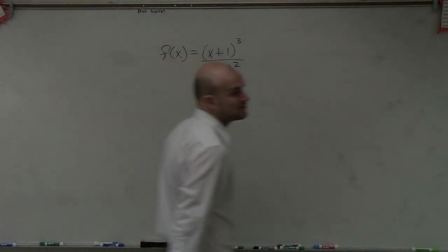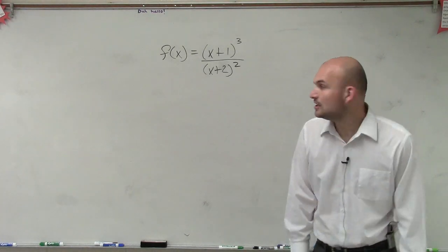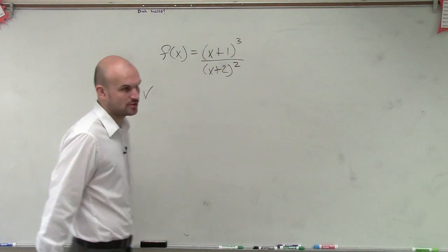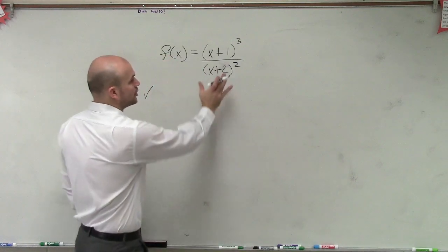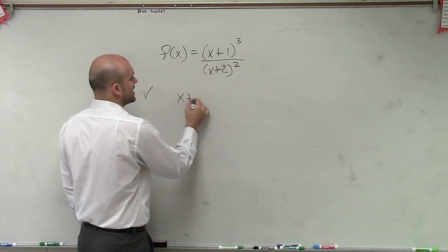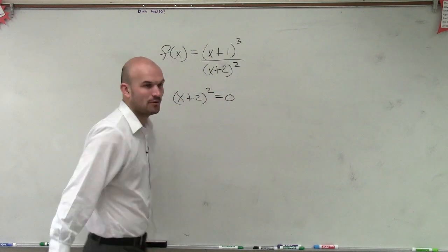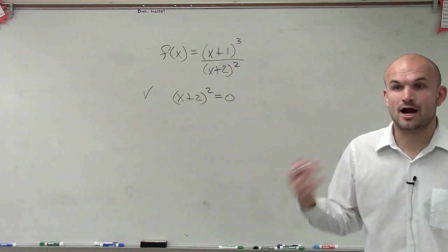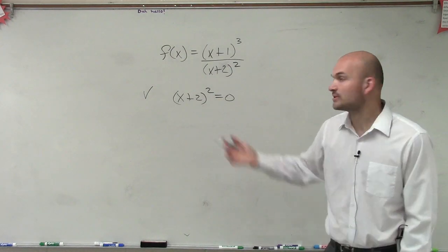On this one, ladies and gentlemen, they're asking us to graph it. So automatically we're just going to go through the steps. The first thing to graphing it is we need to determine the vertical asymptote. Remember, the vertical asymptote is when our polynomial in our denominator is equal to 0. So we know that the values that our polynomial will take when they're equal to 0 are going to create our vertical asymptote.